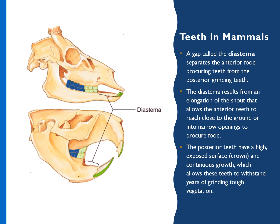Some posterior teeth have a high exposed crown surface and continuous growth, which allows these teeth to withstand years of grinding tough vegetation. The front teeth of rodents have slower wearing compared to the back teeth, keeping them sharp — this point applies here as well.